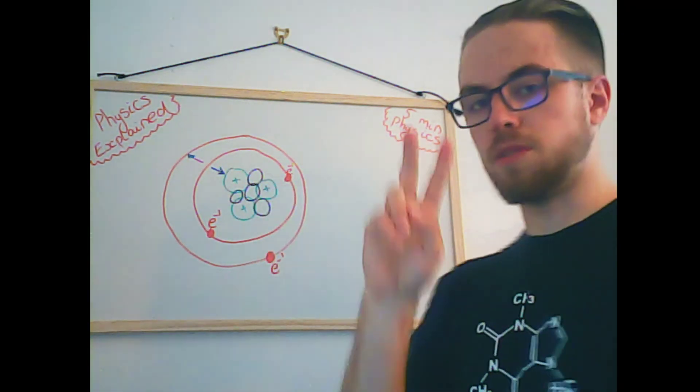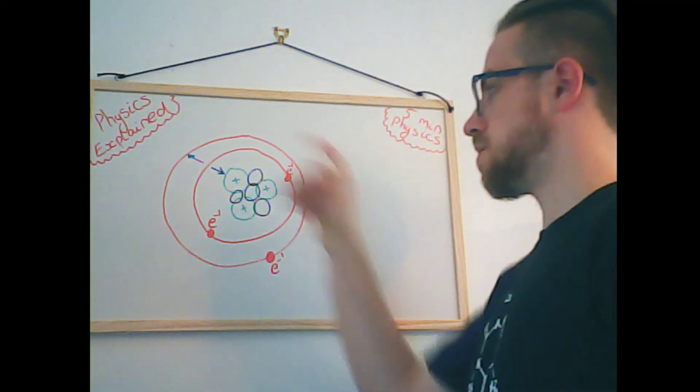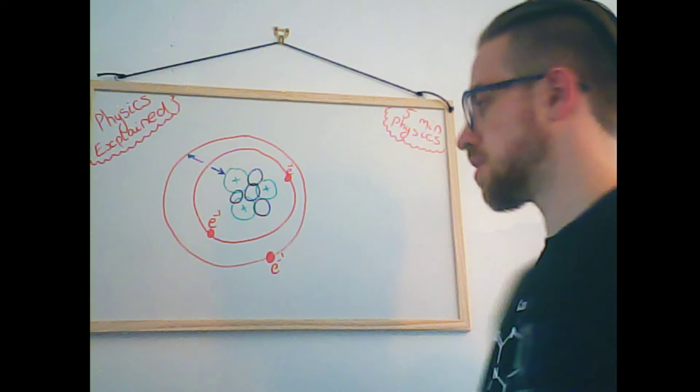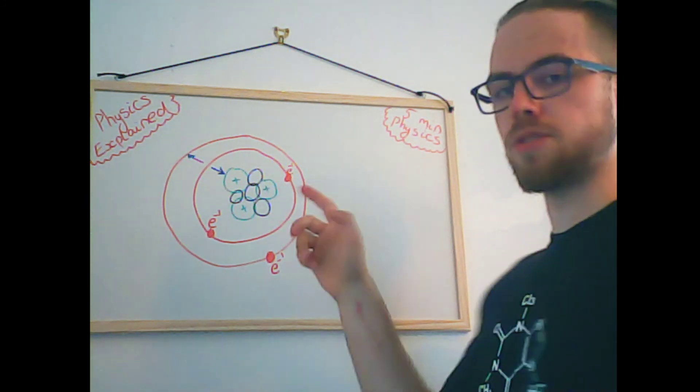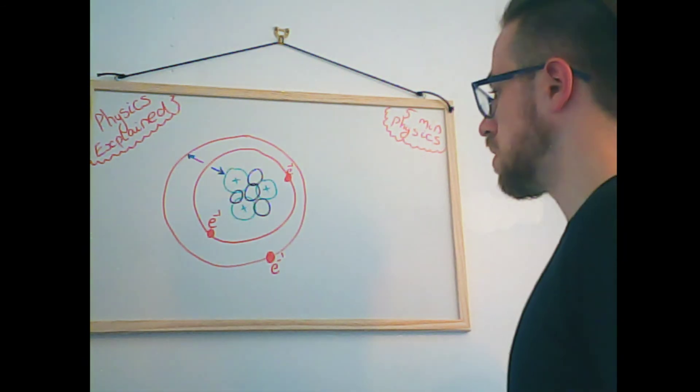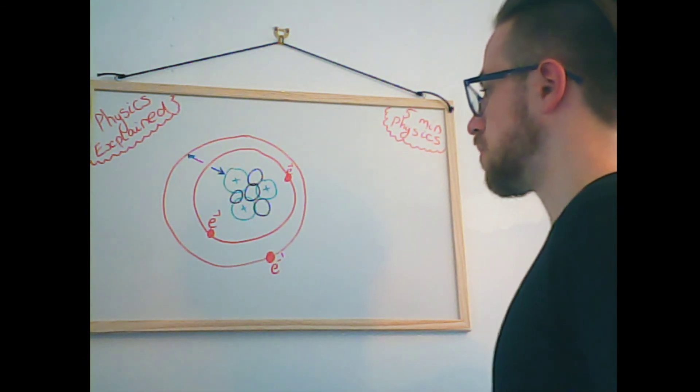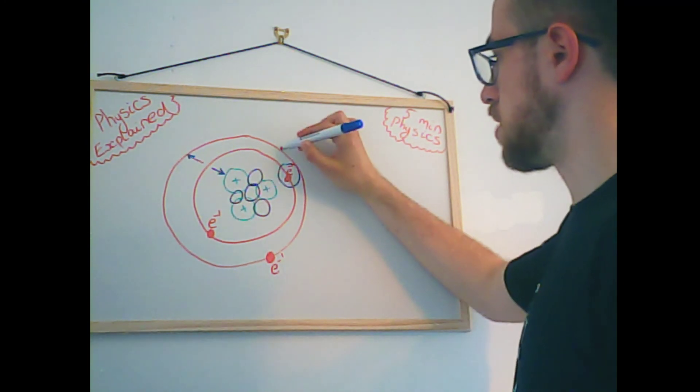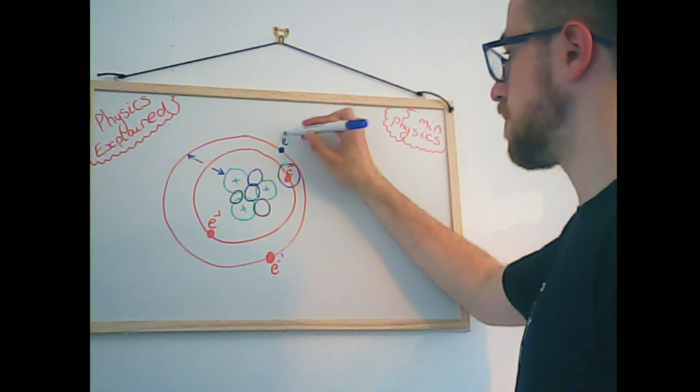Now in the inner shell there can only be two electrons and then the numbers are restricted outwards and outwards and outwards. It's more of a chemistry thing as to how many electrons can be in the shells. It's not really important at this stage. We've simplified it a bit here. So let's say that we give this electron here enough energy so that it can jump to this shell.